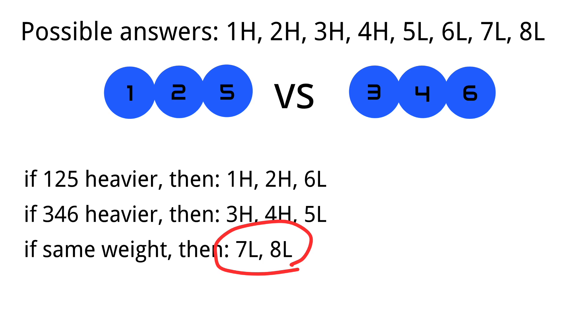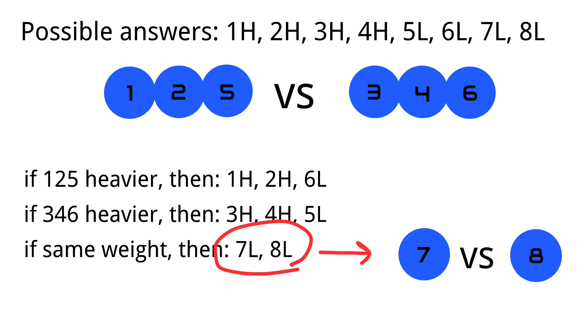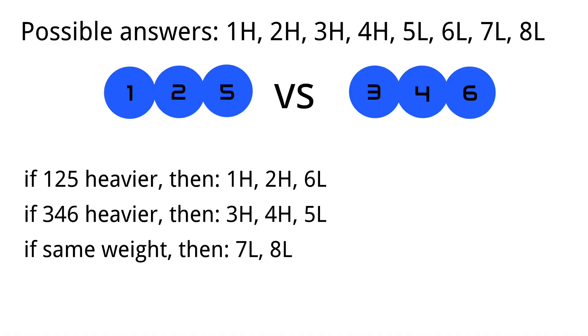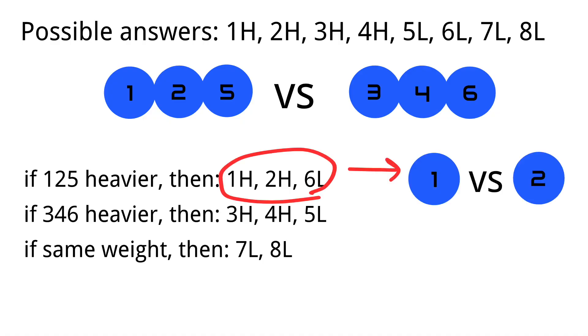The last scale is easy. If you have 2 balls left — say 7 or 8 light — just do 7 versus 8; whichever is lighter is the odd ball. If you have 3 answers like 1 heavy, 2 heavy, or 6 light, do 1 versus 2: whichever is heavier is the odd ball. If they're equal, 6 is the odd ball and it's light.